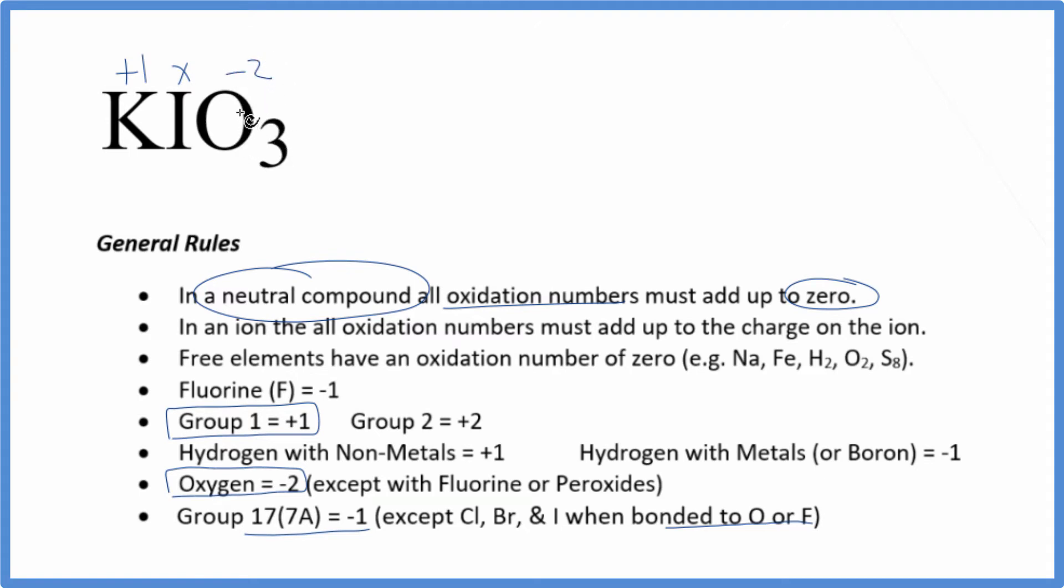All of this, because it's neutral, is going to add up to zero. So we could just set an equation up. We have one plus X, three times minus two is minus six. All that equals zero.